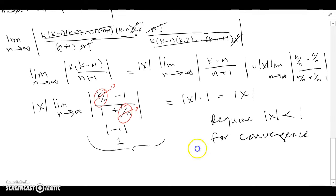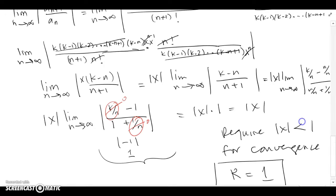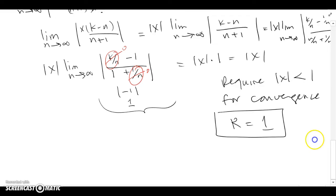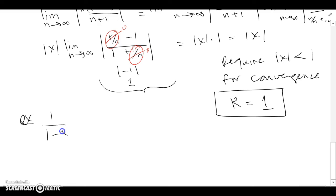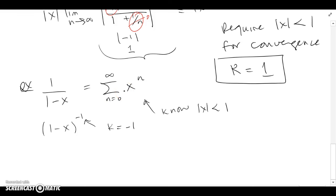Since we're using the ratio test, we require this to be less than 1 for convergence. So the binomial series has a radius of convergence of 1 centered at 0 — it only converges between negative 1 and 1. Unlike the sine and cosine, R=1 here, which makes sense because 1/(1-x) is a special case of the binomial series with k=-1, and we know that only converges for |x|<1 from the geometric series.